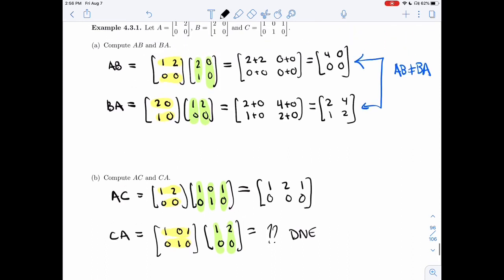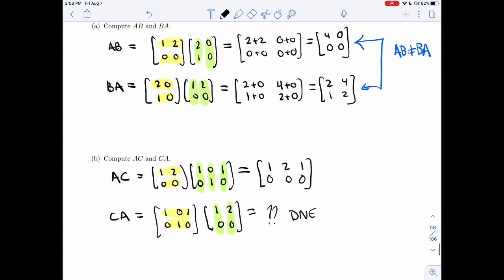Alright, so this is pretty bad. Even for cross product, where it wasn't associative, there was a nice symmetry. If I switch them, I just get an extra minus. This is worse.